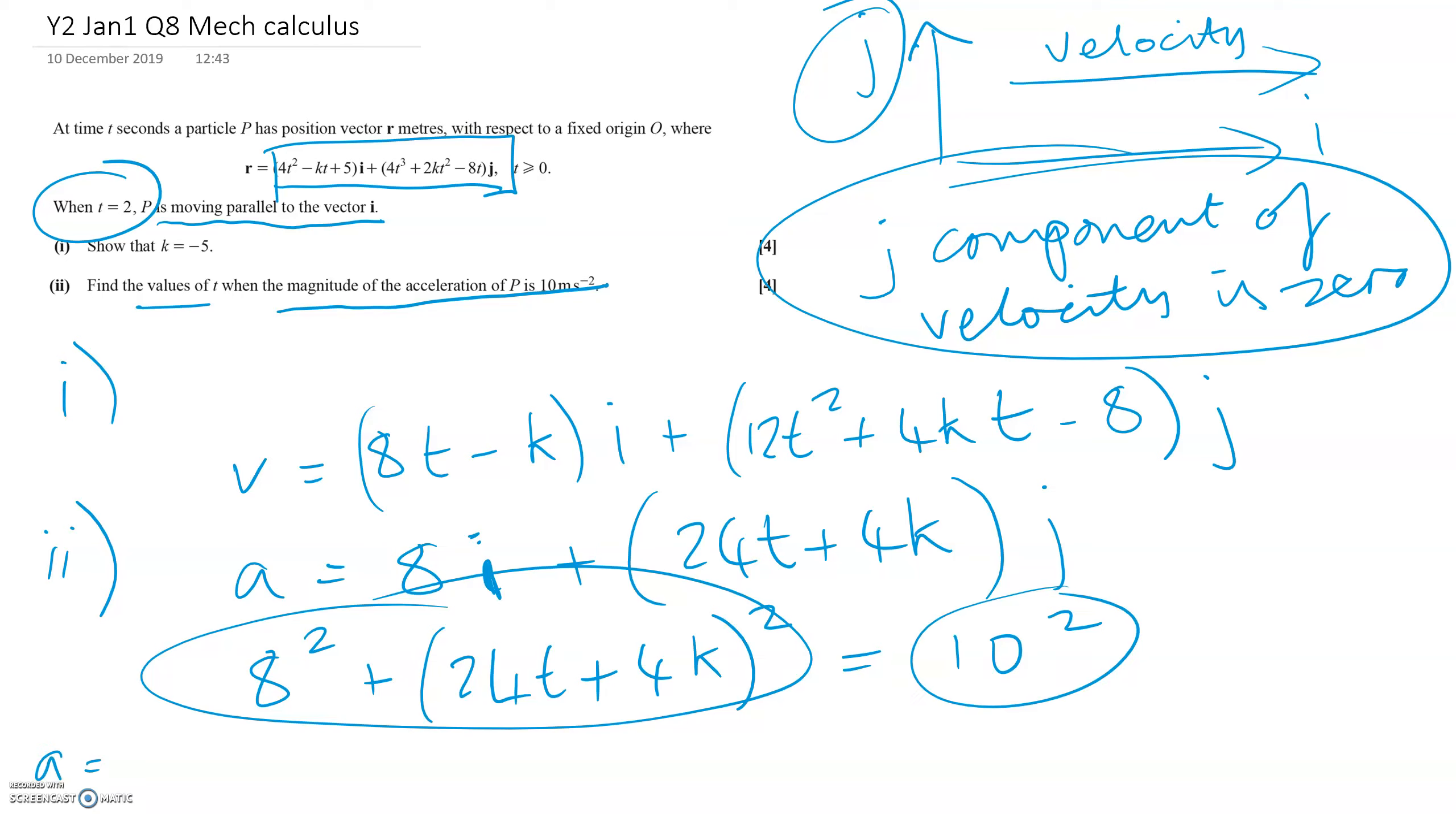Don't forget that in the previous question we found K equals minus 5. So this equation becomes 8² plus (24T minus 20)² equals 100. Rearranging gives us 24T minus 20 equals the square root of 100 minus 64, which is the square root of 36. So that's plus or minus 6.